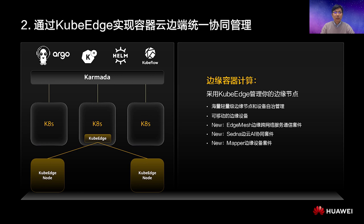Second, you can use KubeEdge to extend your cloud-native platform to the edge and manage your edge software. Widely distributed edge nodes are no longer a headache to manage, and you can enjoy a lightweight running environment and offline autonomy. KubeEdge is ready to use for mobile edge devices — community members have used it in cars and even satellites. This year, EdgeMesh realizes cross-edge service-oriented mutual access, the Sedna edge-cloud AI collaboration suite brings federated inference and enhanced training, and the Mapper edge device suite has been refactored to support more access protocols and edge devices.